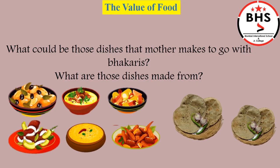Arjun and Varsha's mother makes some more dishes for them to eat with bhakris. What could be those dishes? It could be different vegetables, curries, chutneys, etc. But what are these dishes made from? These dishes are made from different vegetables, spices, pulses, dal, etc.